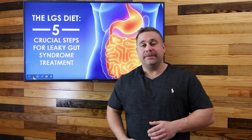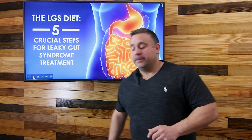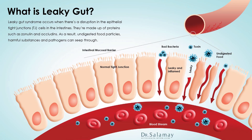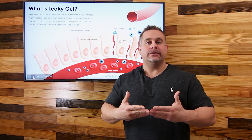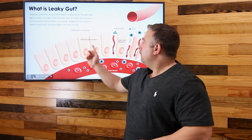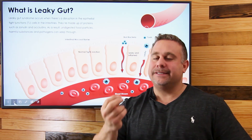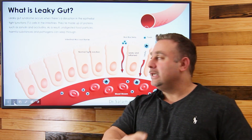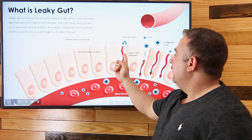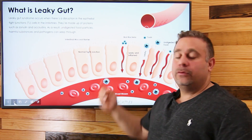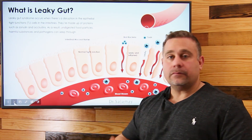Before we get into all the steps, I do want to explain what leaky gut is, because a lot of people have heard about it but don't really know much about it. In a normal gut, we have these tight junctions or TJ cells, and normally they stay closed, or they may open for just a millisecond. But in leaky gut, what happens is they become open, permeable, or leaky.